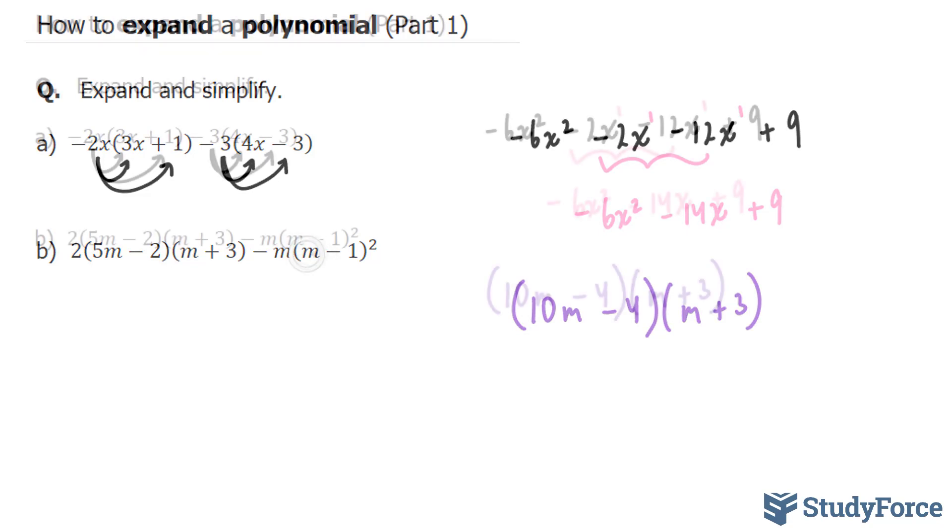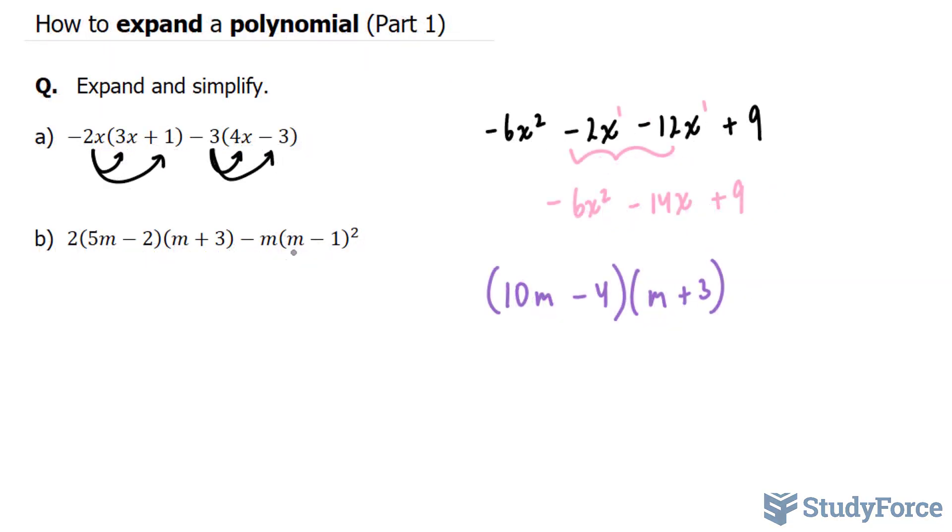At the same time, I'm going to expand this portion of the polynomial so that it looks like this, minus m, m minus 1, m minus 1. Because m minus 1 to the power of 2 is the same thing as this expression.